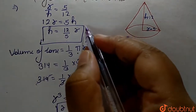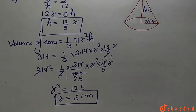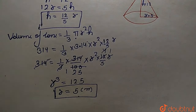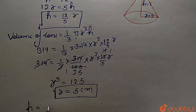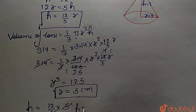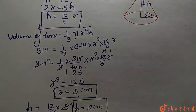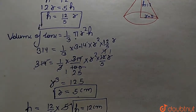Now we put the value of r to find h. Substituting r equals 5 into h equals 12 upon 5 multiplied with r: the 5s cancel, giving h equals 12 centimeters.